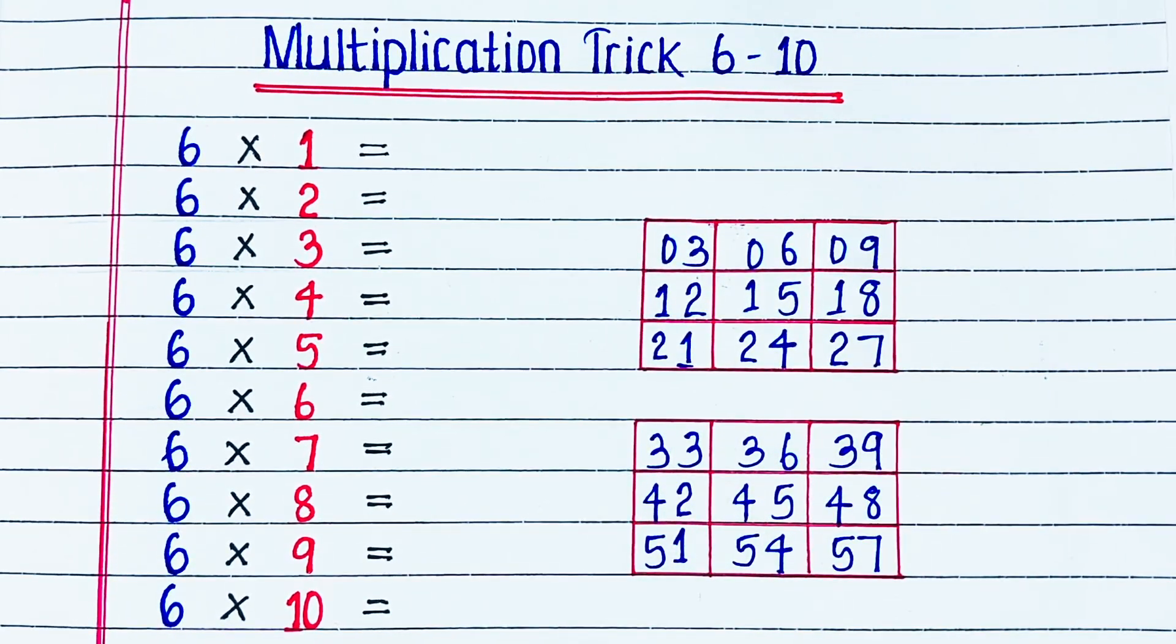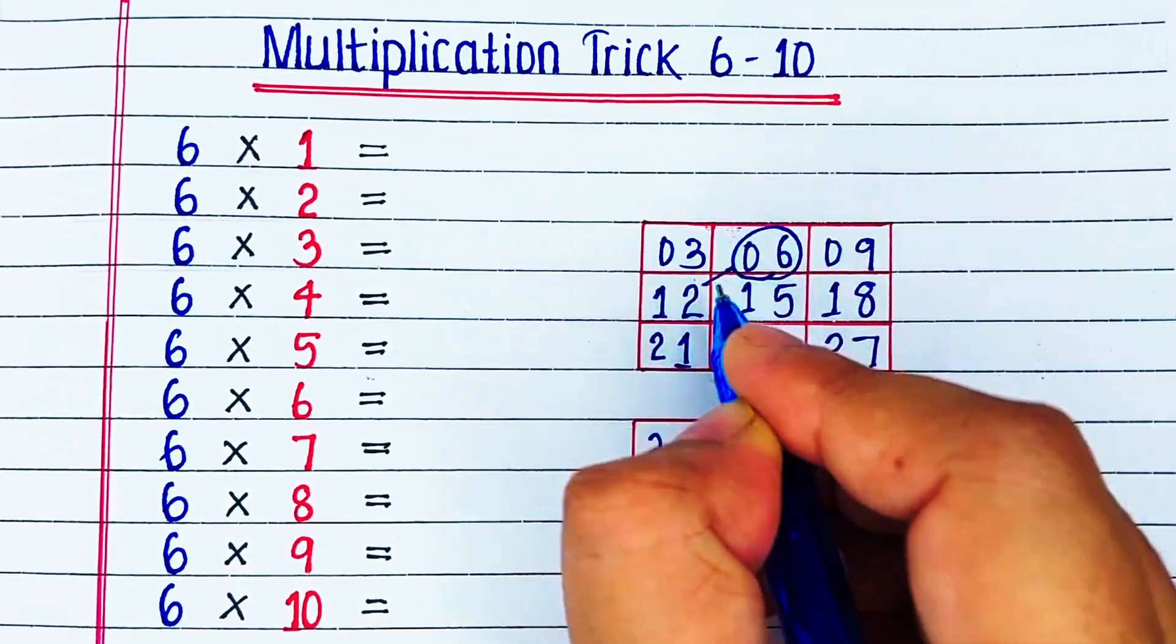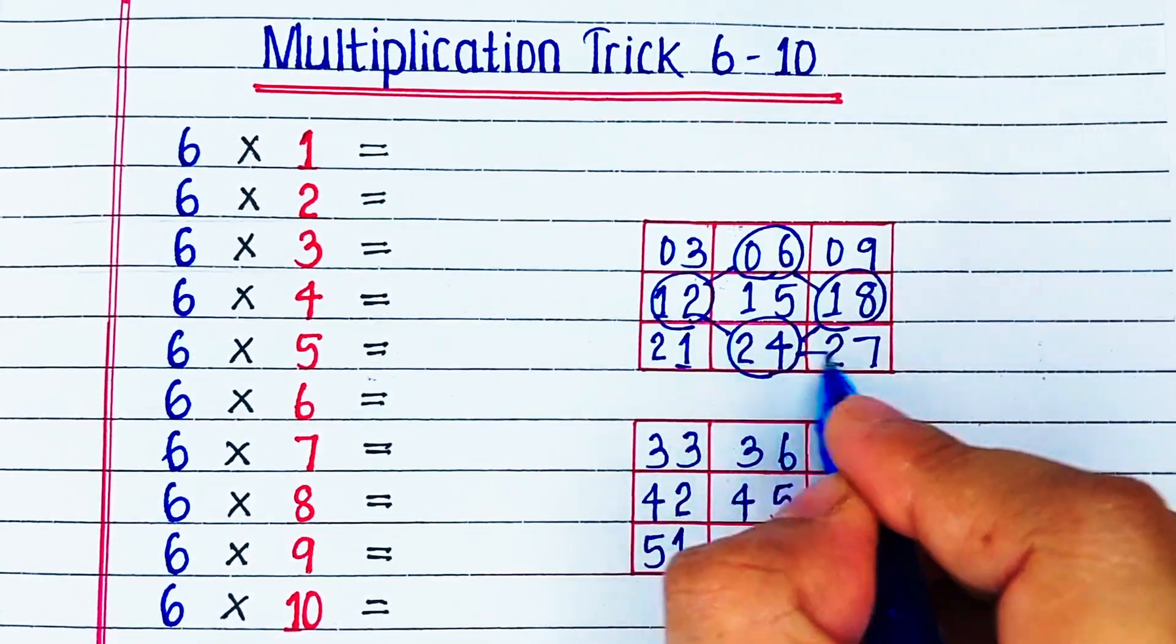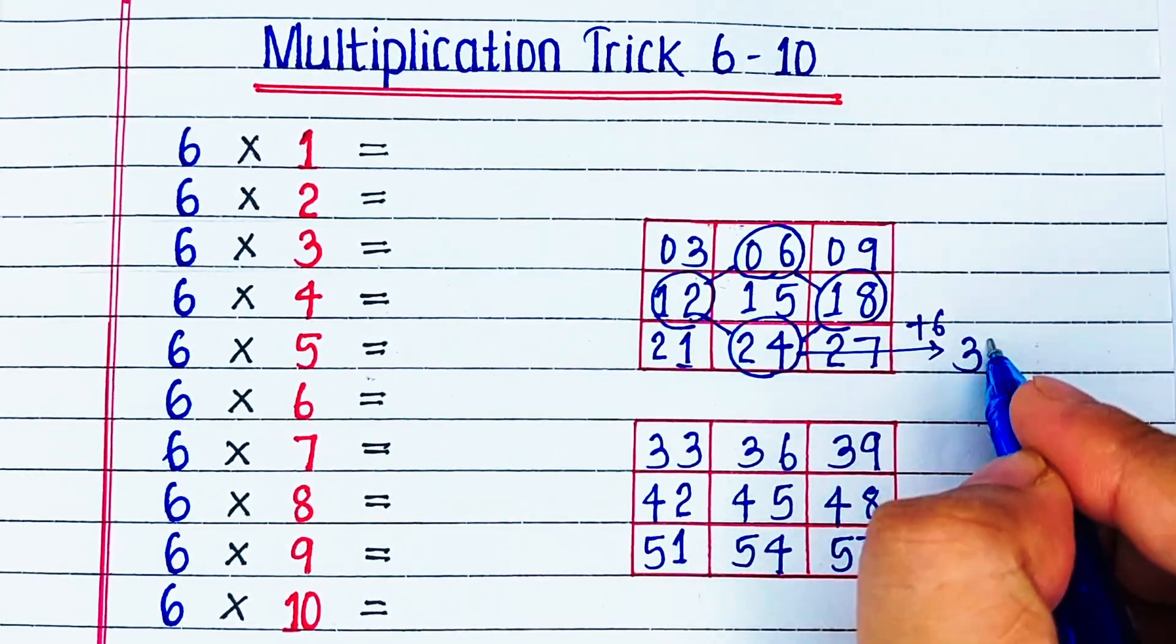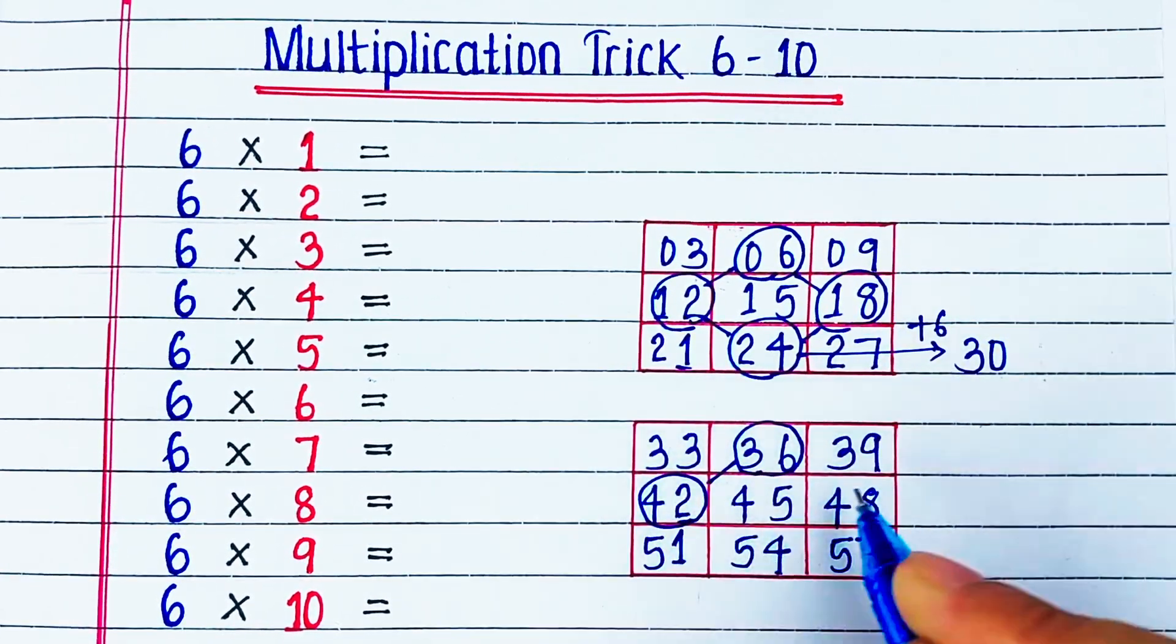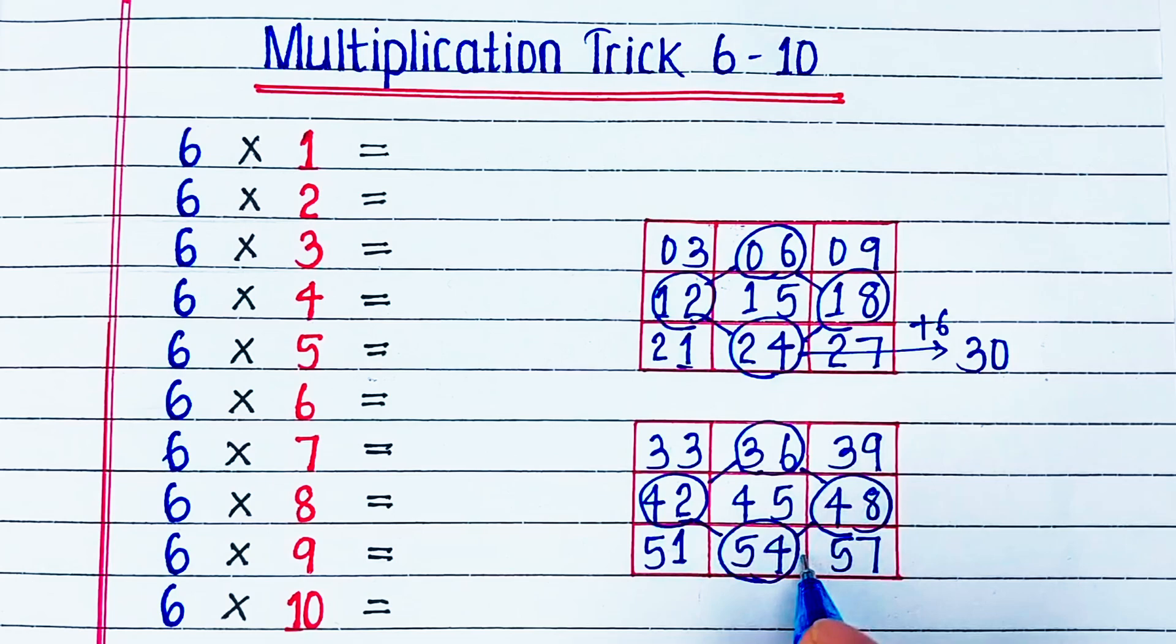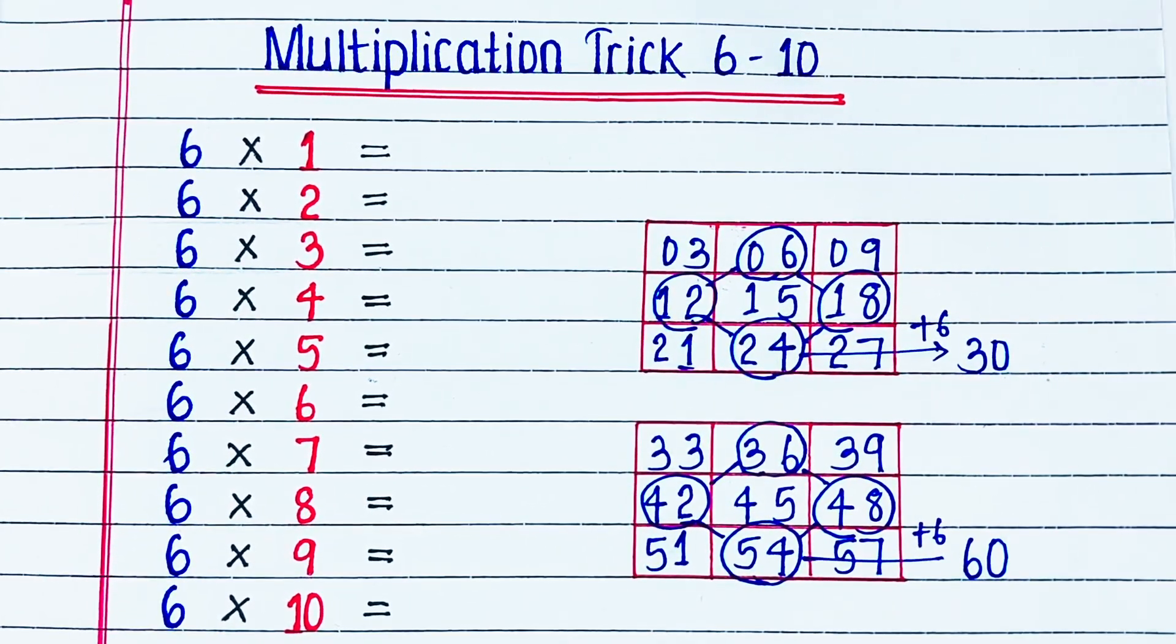Now we will make a diamond in each grid. Then we will add 6 to the highest number of the grid. In the first grid we will add 6 to 24, that makes 30. We will write this 30 outside the grid. And for the second grid we will add 6 to 54, that makes 60, and we will also write this number outside the grid. With this we have completed the 6 times table.